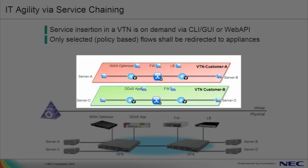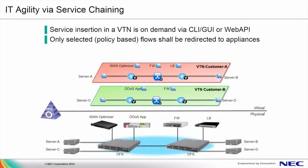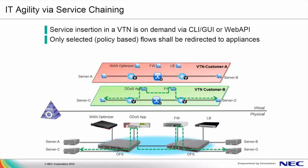Moving up to the virtual network view, here we have two tenants: customer A in red and customer B in green. Customer A is leveraging server A and server B, while customer B is leveraging server C and server D. Getting to IT agility, we can introduce specific network functions for different customers as needed. Suppose customer A wants to introduce WAN optimization, firewall, and load balancing services in the path of traffic between server A and server B. Using programmable flow, we can deploy flow filters to introduce these network functions into the path of traffic. Similarly, suppose customer B wants to introduce DDoS and firewall — again, using flow filters, we can build the required service chain to stitch only the desired flows into the path of traffic. These changes can be achieved on demand via centralized control from the CLI, the GUI, or via a series of Web API calls from some sort of orchestration system. Next, we'll show the required configuration on the PFC to deploy service chaining in this fashion.